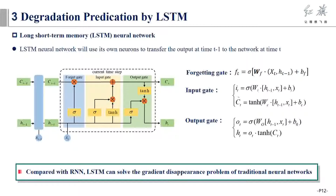The long short-term memory neural network is composed of a forgetting gate, input gate, and output gate.